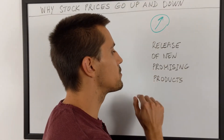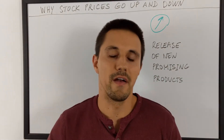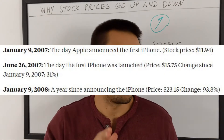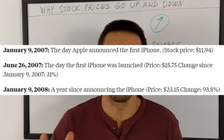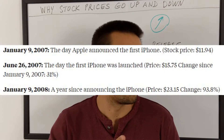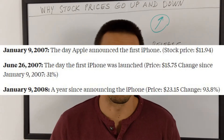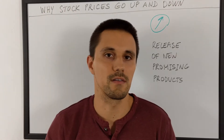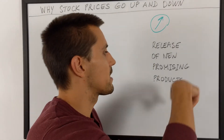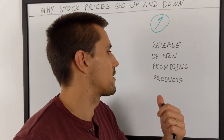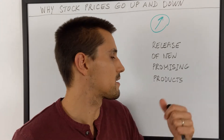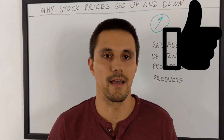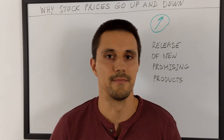The next reason why stocks go up is the release of new promising products. A simple showcase example: when Apple released their first iPhone in 2007, everybody was amazed. The stock price went completely crazy because everybody saw it was a promising, innovative product that would probably change the world and change the company.